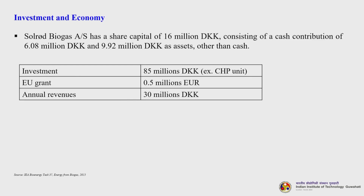In terms of investment and economy, Solrød Biogas has a share capital of 16 million Danish kroner — consisting of a cash contribution of 6.08 million and 9.92 million as non-cash assets. Total investment is 85 million DKK excluding the CHP unit. The EU grant is 0.5 million euros and the annual revenue currently is around 30 million Danish kroner. This is quite a success story.